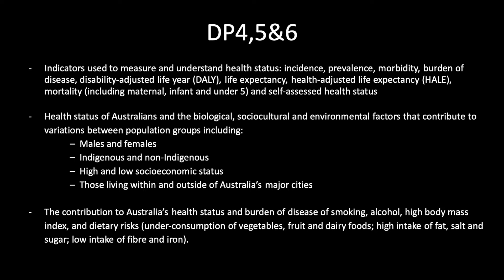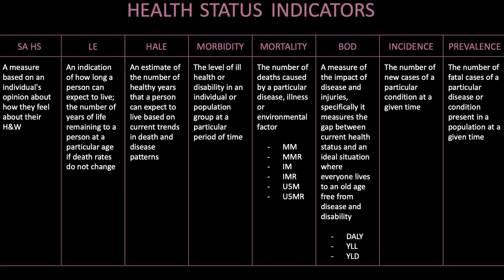Also covered are mortality including maternal, infant and under-five, and self-assessed health status. The health status of Australians and the biological, sociocultural and environmental factors that contribute to variations between population groups including males and females, indigenous and non-indigenous, high and low socioeconomic status, and those living within and outside of Australia's major cities. The contribution to Australia's health status and burden of disease of smoking, alcohol, high body mass index and dietary risks.